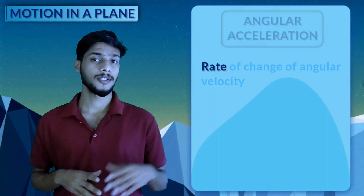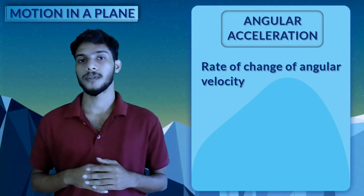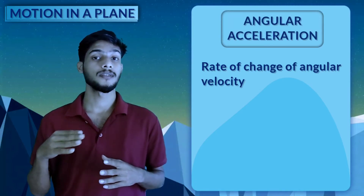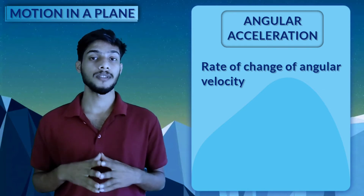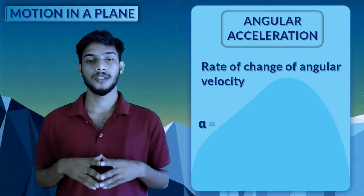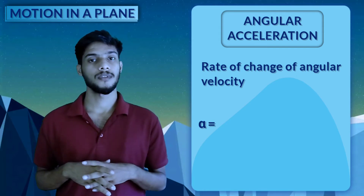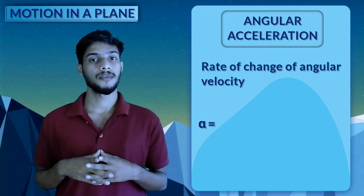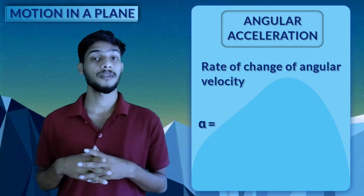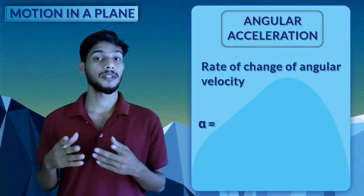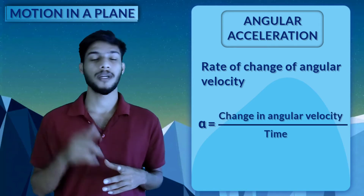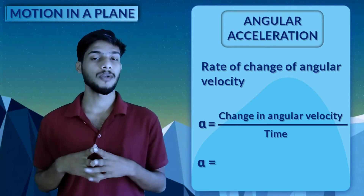Now we have angular acceleration. The rate of change of angular velocity is angular acceleration. Alpha is equal to the rate of change of angular velocity, which is the change in angular velocity divided by time.